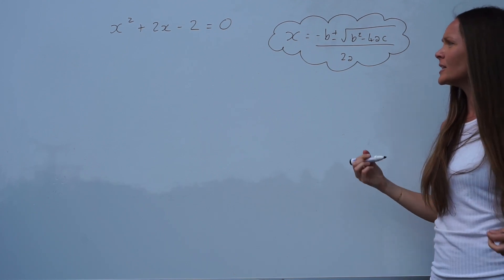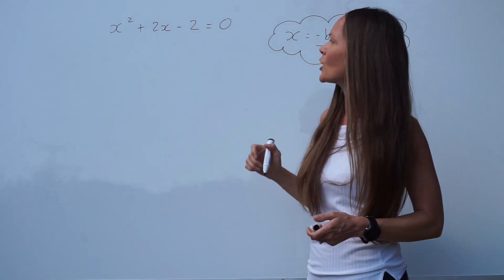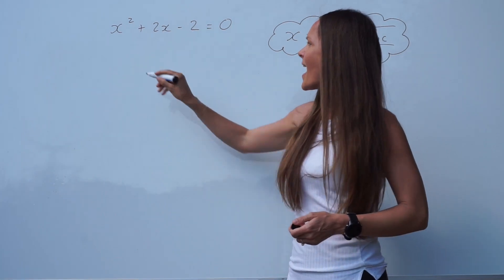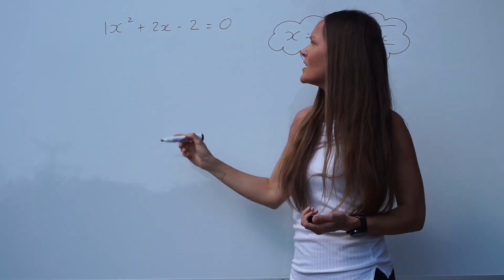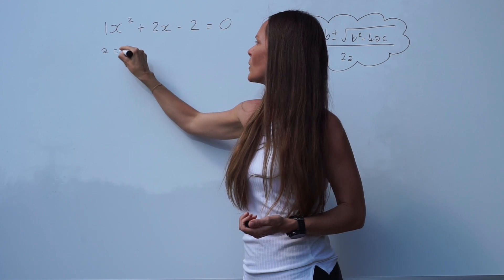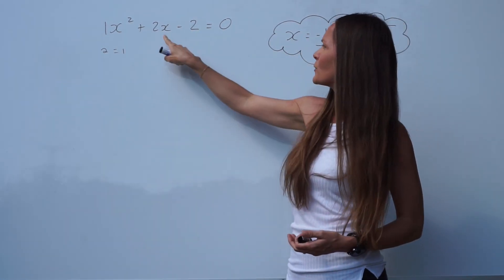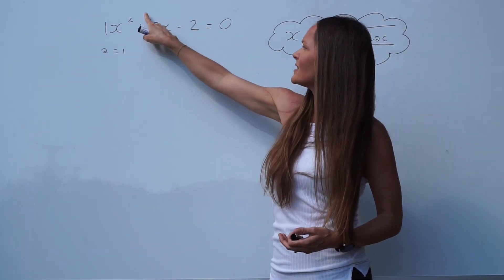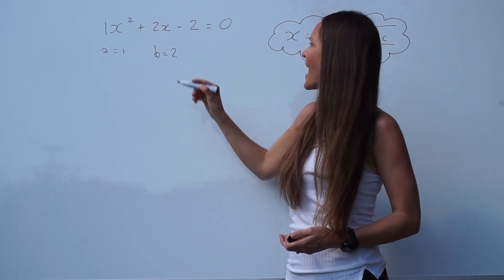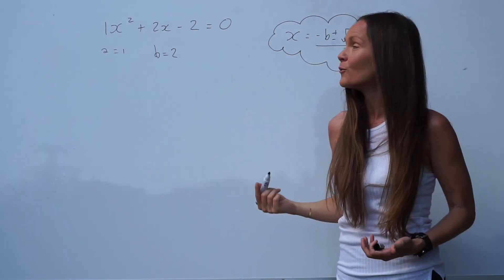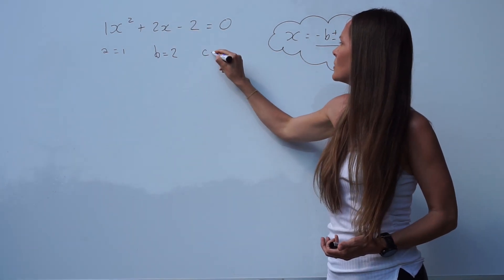Remember, the values a, b, and c we can find from our equation. a is the number of x squareds, so in this case a is 1. b is the coefficient of x, so it's positive 2. And c is just the number by itself without the x term, so it's negative 2.